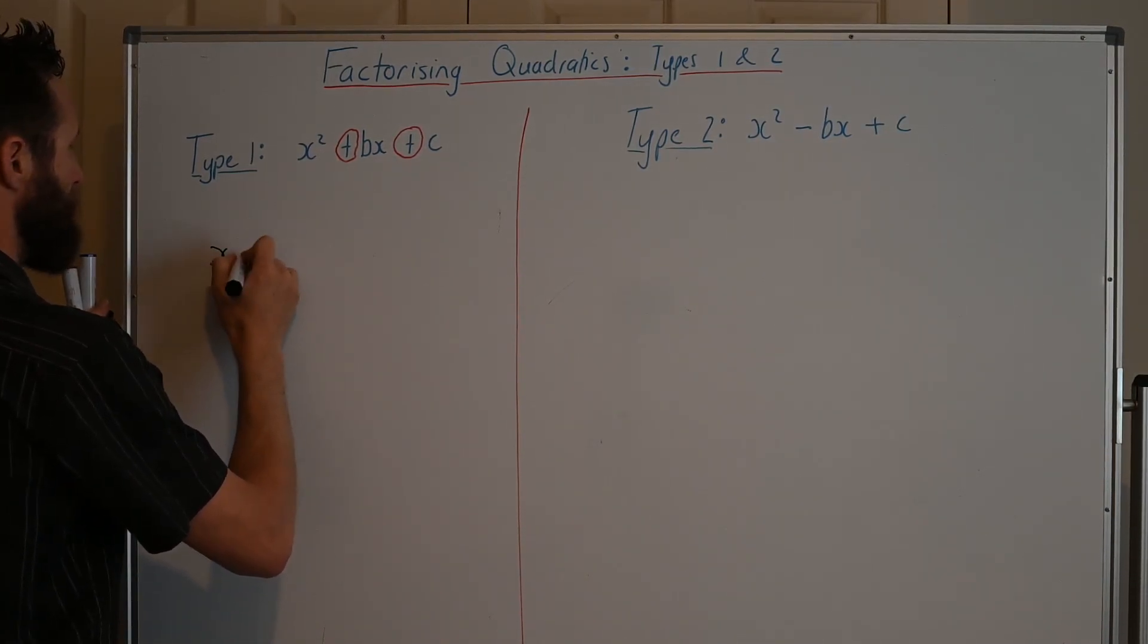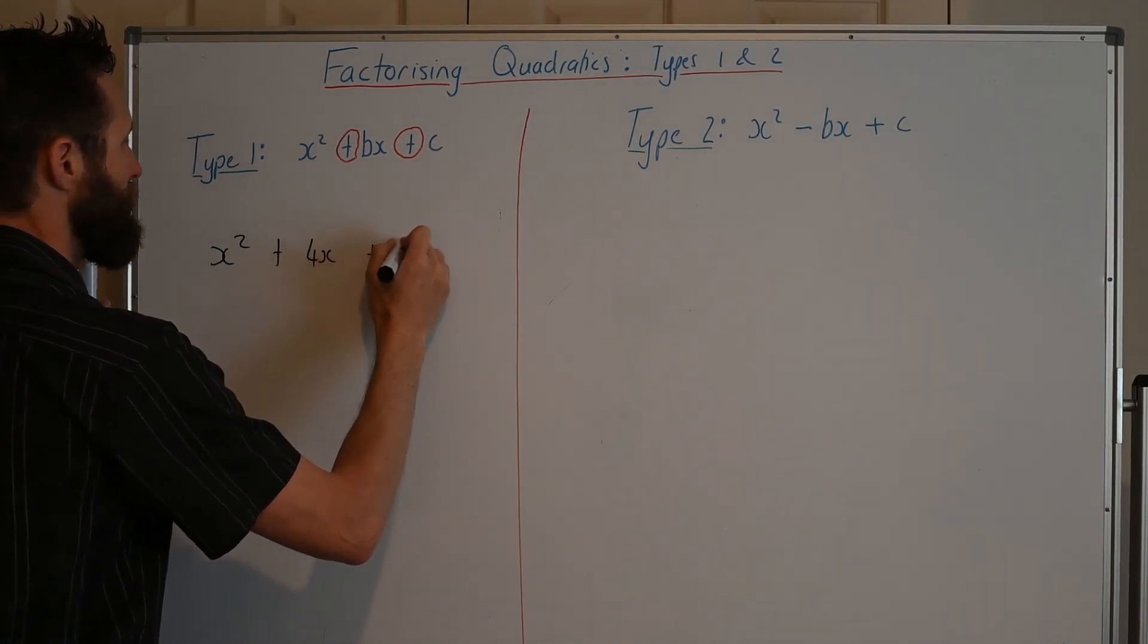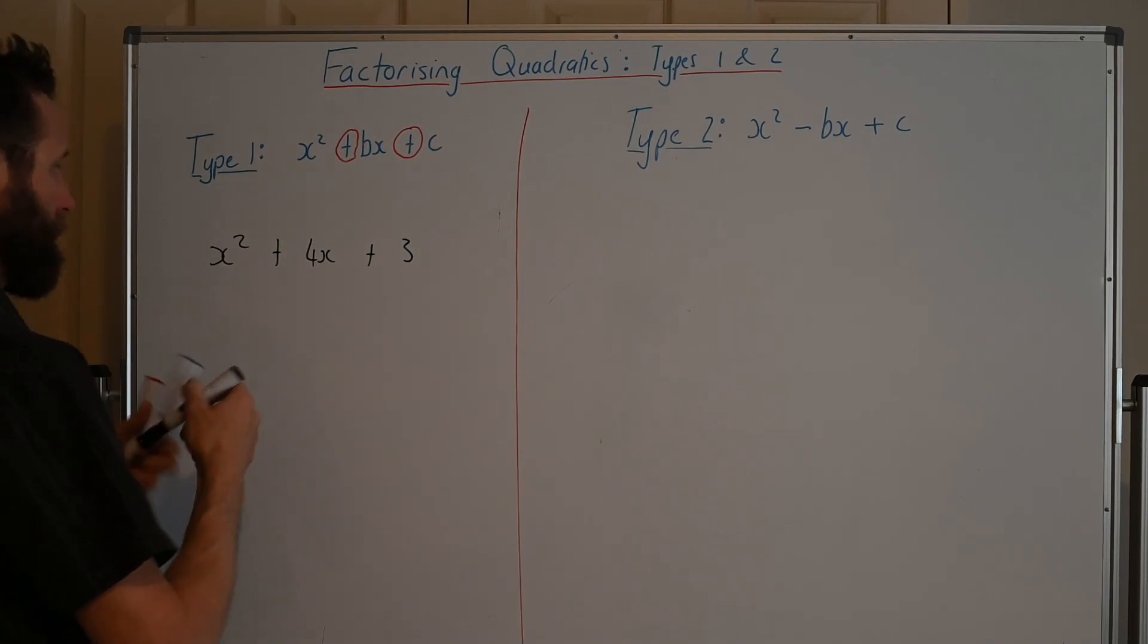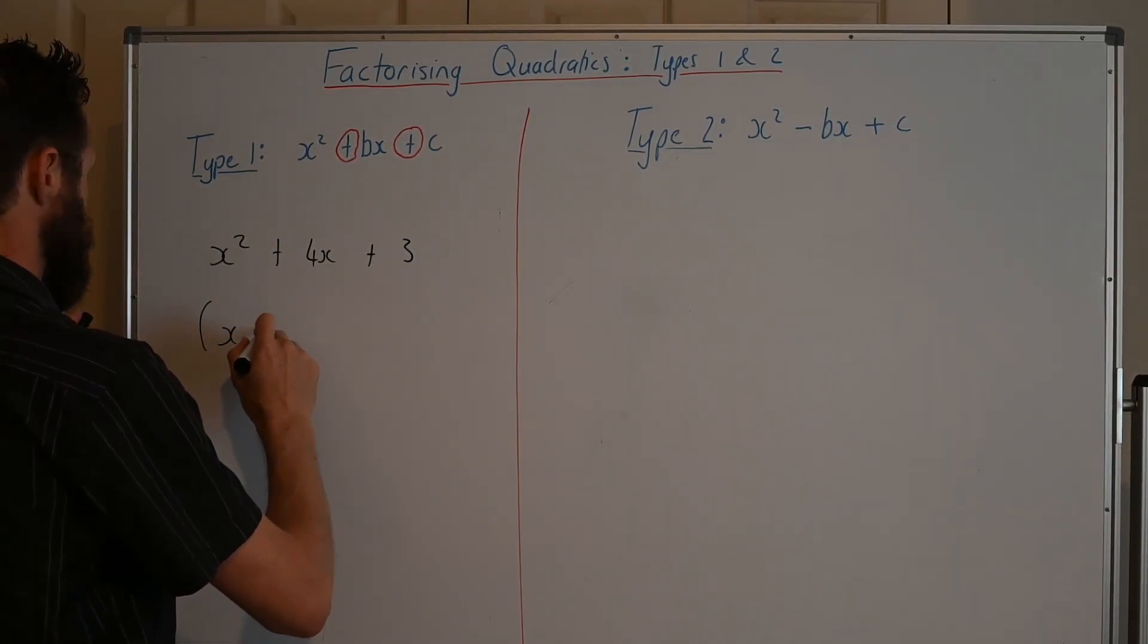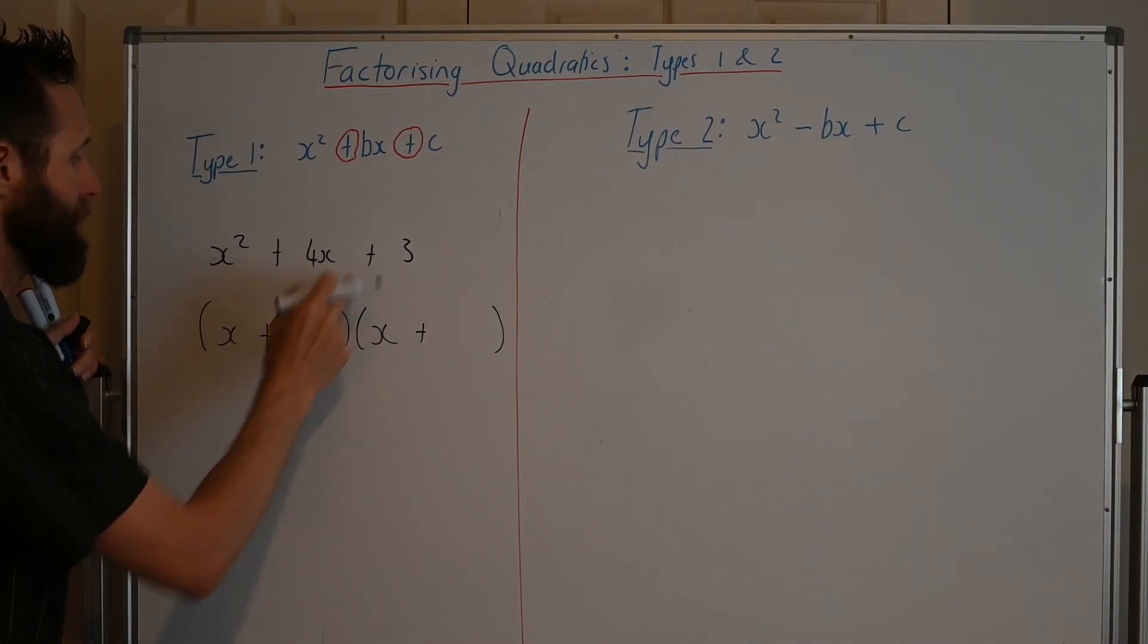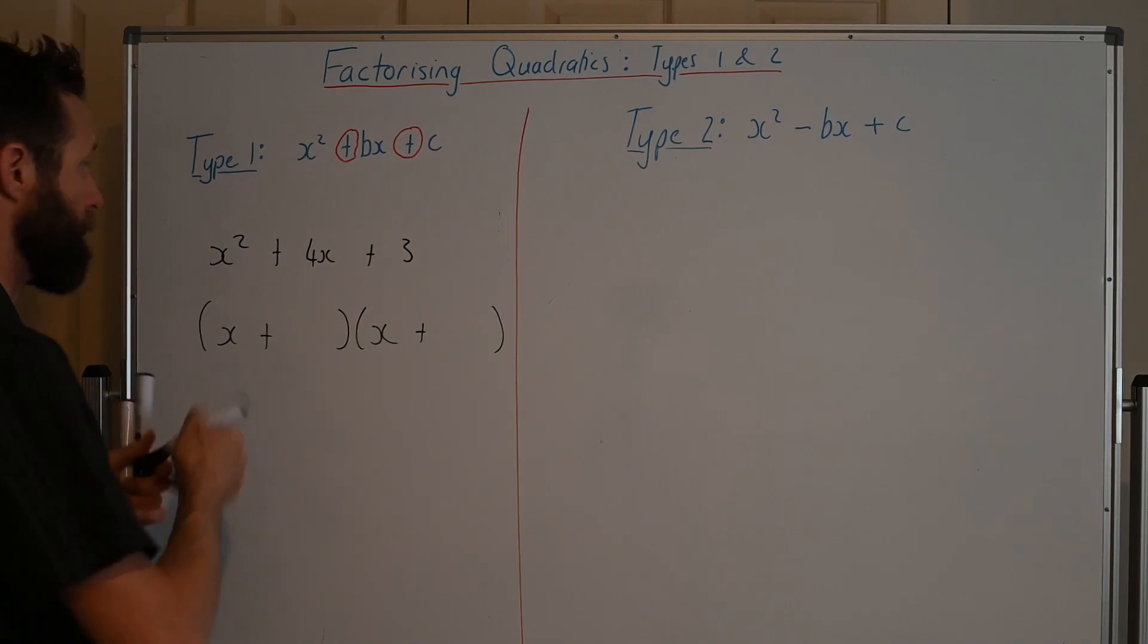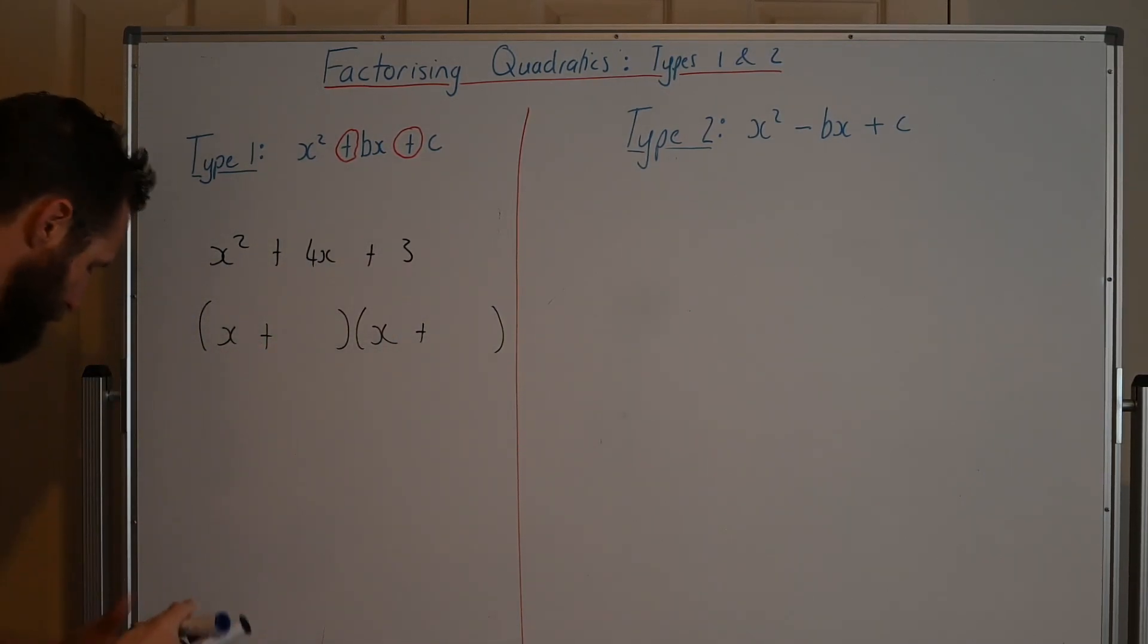So here's our example of type 1, x² + 4x + 3. Now, we immediately can write our brackets. We can go (x + )(x + ). When you've got a plus here and a plus here, you know that in both brackets you're going to have an x plus and an x plus. That's the rule.